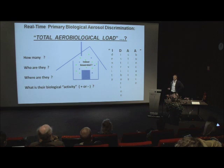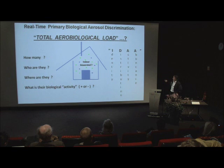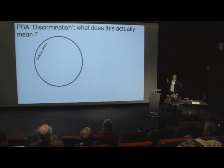These questions really boil down to this acronym: identity, distribution, activity, and abundance, if we make a composite of all these questions. So we're going to get to at least one or two of these in the acronym here, and that is distribution and abundance. I'm going to use the acronym PBA — Primary Biological Association, or Primary Biological Activity — several times through this.